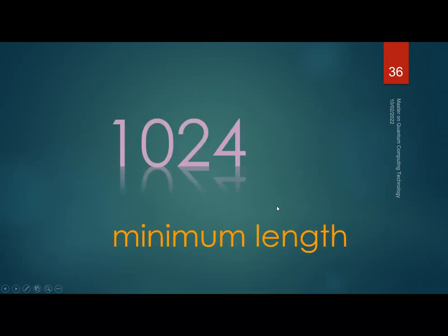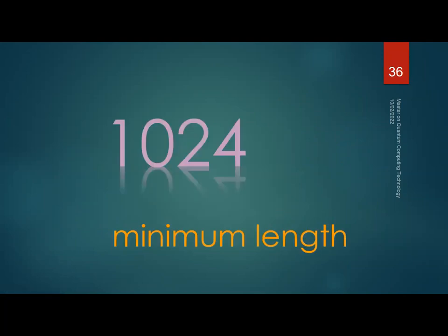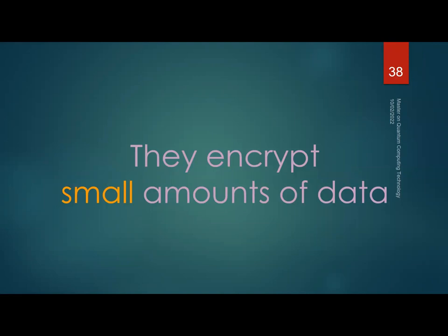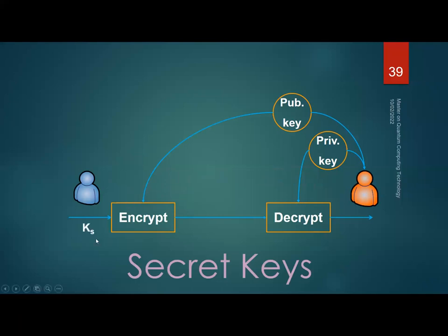A drawback of asymmetric algorithms is that they are much slower than symmetric algorithms, so they encrypt small amounts of data. In practice, the main use is to securely send the key for a symmetric cryptosystem — we encrypt the symmetric key using the recipient's public key, and they decrypt it with their private key.